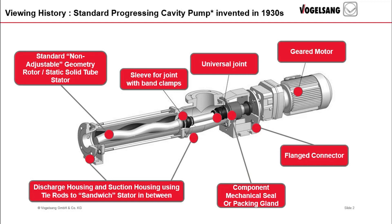The stator is compressed internally by the insertion of the metal rotor that creates a sealing line. The rotor rotates within the stator, forming the cavity that the liquid enters. This elastomer compressed sealing line maintains the shape and volume of the cavity and prevents backflow or slip of the liquid towards the pump suction housing.